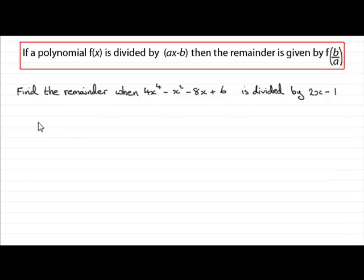So what we do is, let's just first of all define f of x as being this polynomial. It's always a good habit to get into. f of x is identical then to 4x to the power 4 minus x squared minus 8x plus 6.